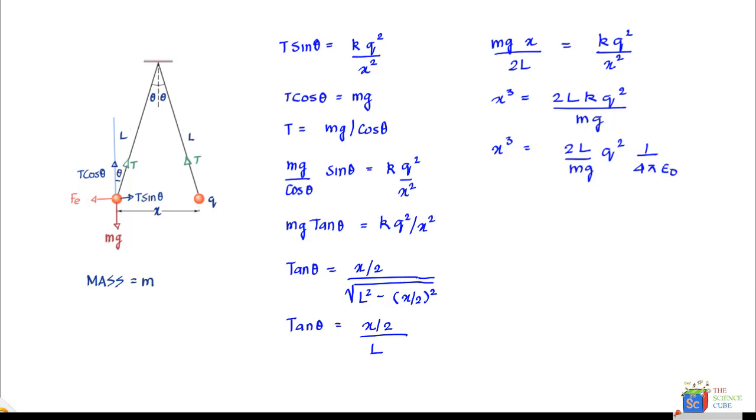Then you can see that this cancels once, so you get 2 over here. What you get as x is x equals one third of L q square upon 2 mg pi epsilon naught, this raised to the power of 1 upon 3.